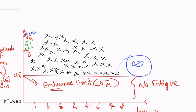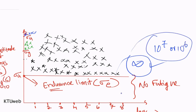This is not practically viable — designing something for infinite number of cycles is an idealistic statement. In practical situations, infinity is taken as 10 raised to 7, or sometimes 10 raised to 6. Many textbooks have different standards. In practical cases, you design for 10 raised to 7 cycles or 10 raised to 6 cycles to avoid failure under cyclic loading.